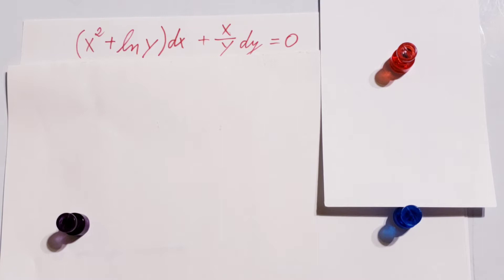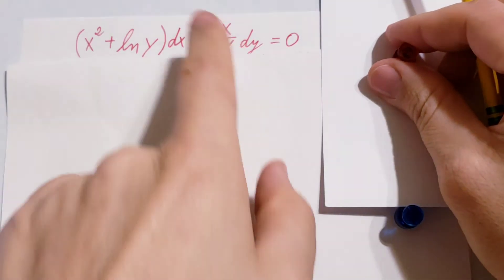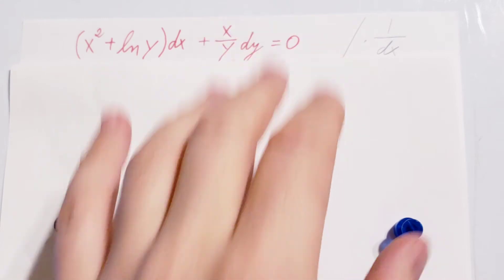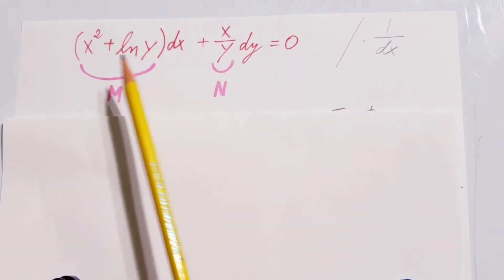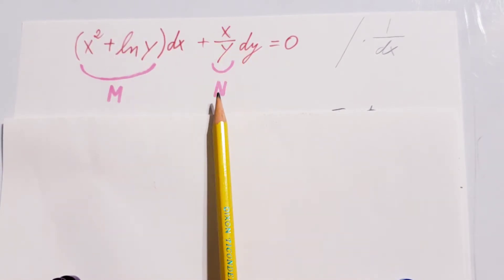Okay, now let's get started with this problem. I'm going to go ahead and divide this equation by dx in order for it to come right here under dy. And now I'm able to designate this part as my M and this part as my N.